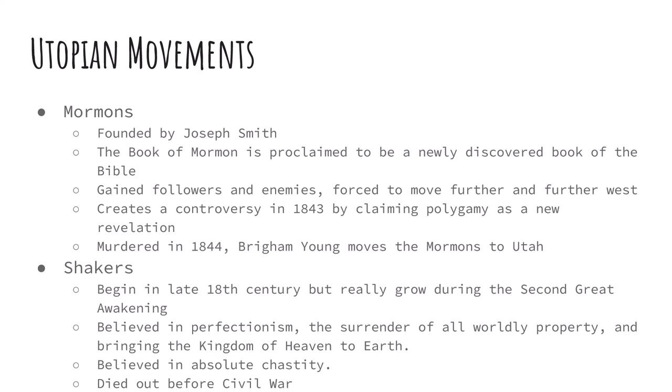The Mormons were founded by Joseph Smith in Rochester, New York, which was the headquarters of the Second Great Awakening. Smith based his new religion on what he claimed was a newly found book of the Bible — the Book of Mormon. His church became the Church of Jesus Christ of Latter-day Saints. He quickly gained followers and enemies, moving further and further west to escape persecution. In 1843, Smith created even more controversy by claiming polygamy was acceptable. Then in 1844, the Mormons had made it as far as western Illinois when Smith was put in jail on charges of treason. While in jail, he and his brother were busted out and then murdered by a mob.